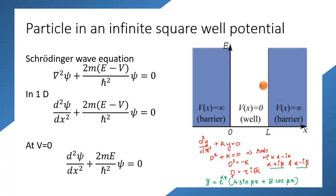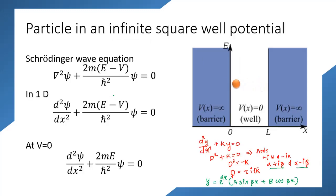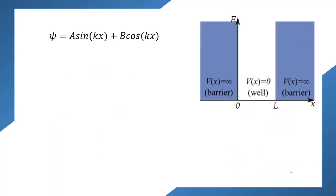Here α = 0 and β = k. Therefore, our wave function becomes ψ = A sin(kx) + B cos(kx). This is the general mathematical form of the wave function. The particle behaves like a wave inside this potential well — either as a cos wave, a sin wave, or a combination of both.